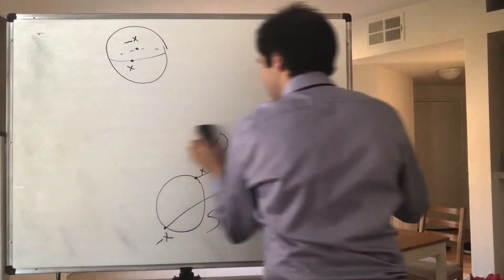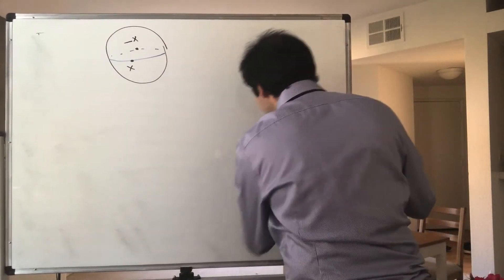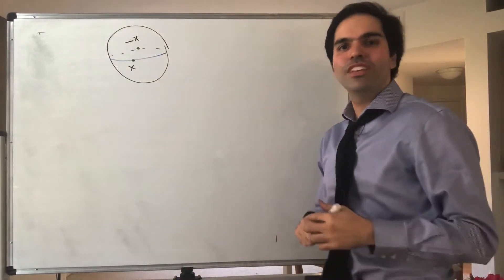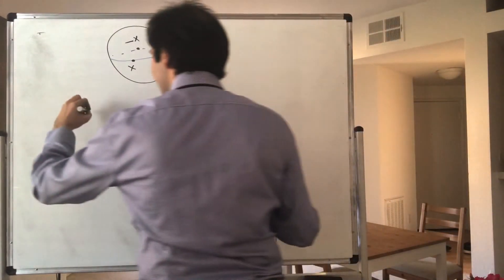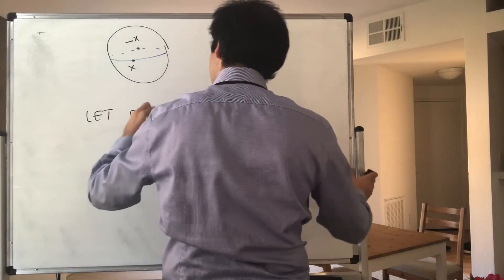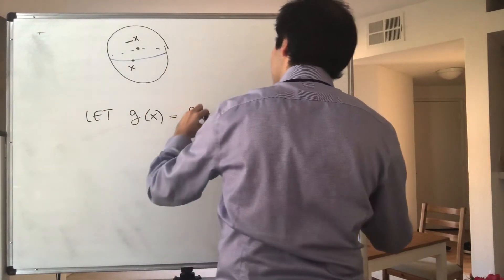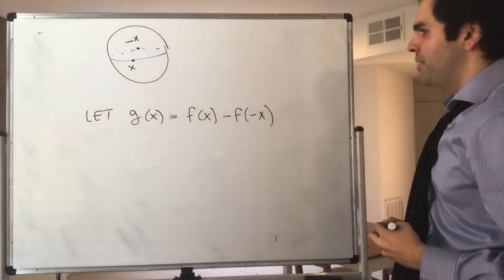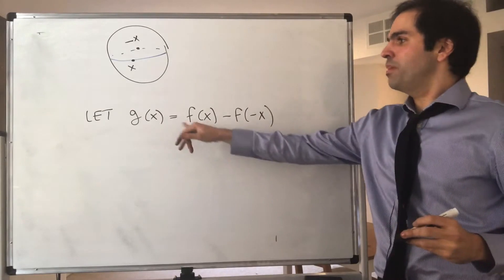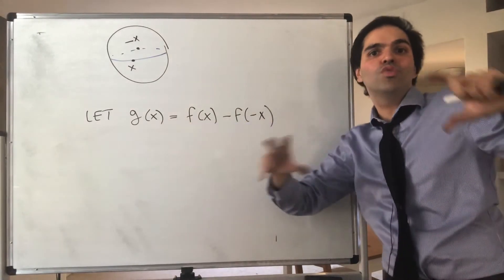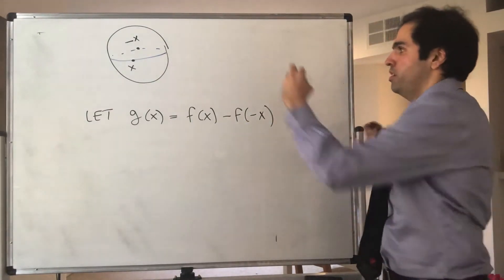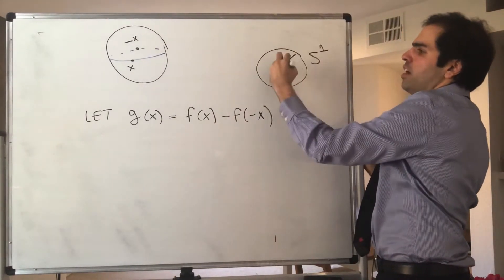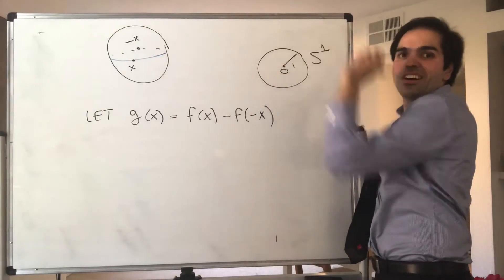The reason I'm doing this is because the proof is pretty neat. It's just an application of the intermediate value theorem. So let g(x) be f(x) minus f(-x). And by the way, careful, you can't just plug in x equals 0, because 0 is not on the circle. This is the circle of radius 1, that's S¹. And 0 is not in S¹.